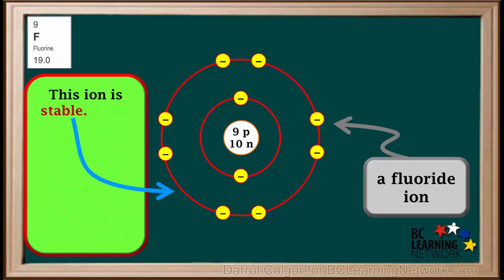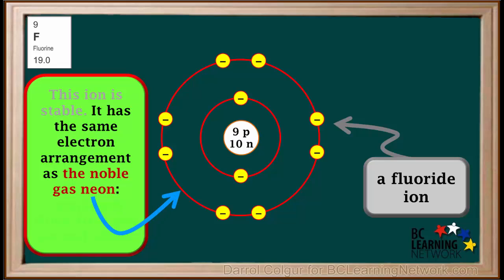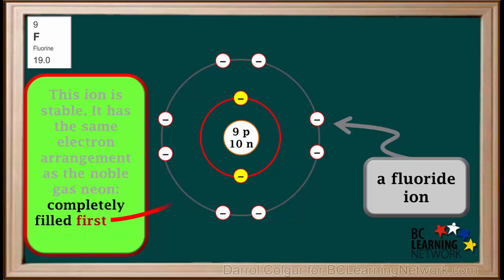This ion is stable. Because it has 10 electrons, it has the same electron arrangement as the noble gas neon, with completely filled first and second shells.